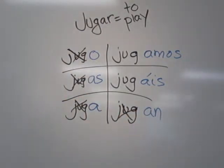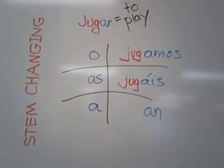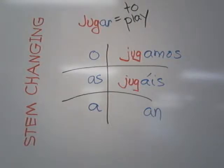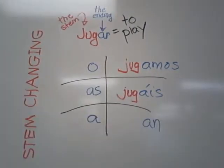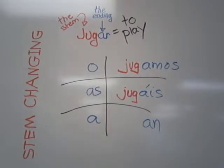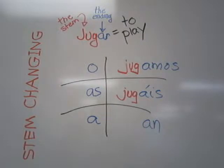Because jugar is a stem-changing verb. A stem-changing verb means that the stem itself changes inside the boot. The ending of the verb is the blue part — the AR — which changes to the endings: o, as, a, amos, ais, an in the verb.